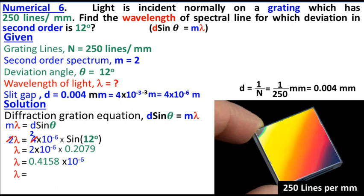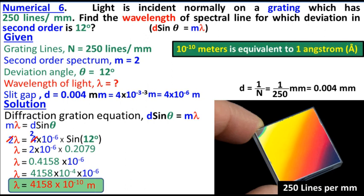Lambda equals 0.2079 times 2 equals 0.4158 times 10 to the minus 6. Converting this, 0.4158 becomes 4158, so we get 4158 times 10 to the minus 10 meters. Since 10 to the minus 10 meters equals 1 angstrom, the answer is 4158 angstroms.